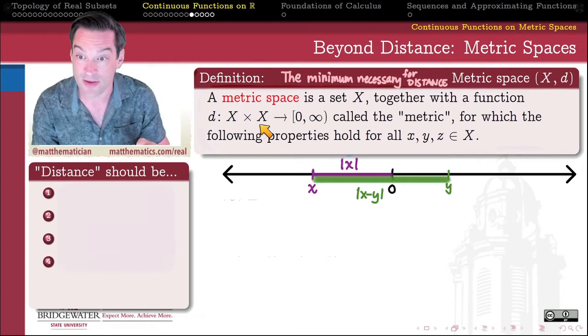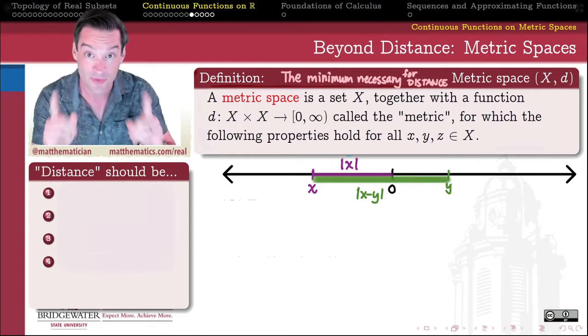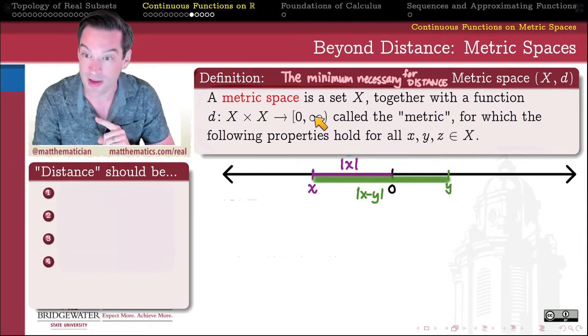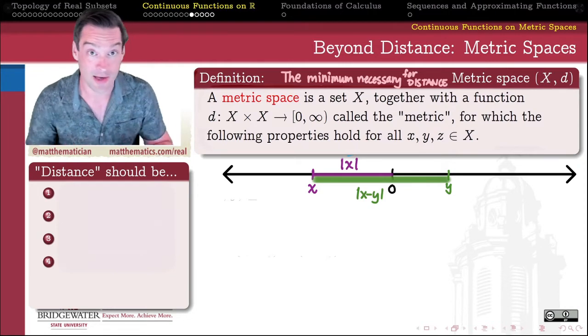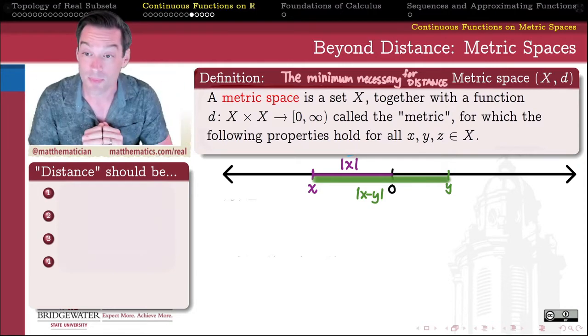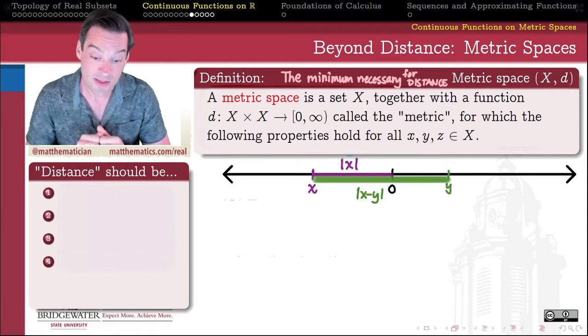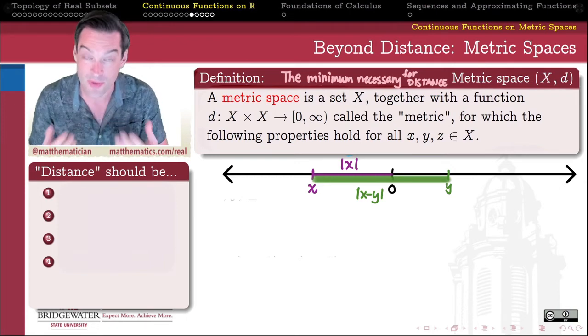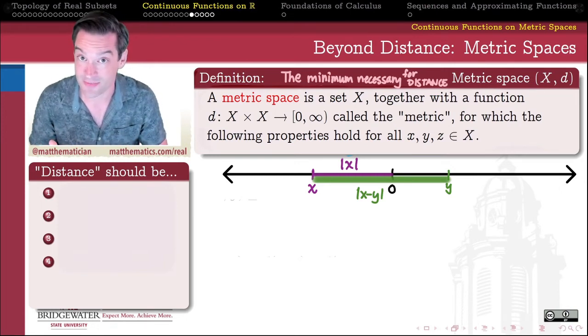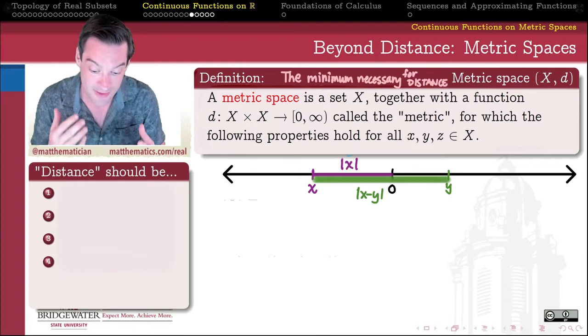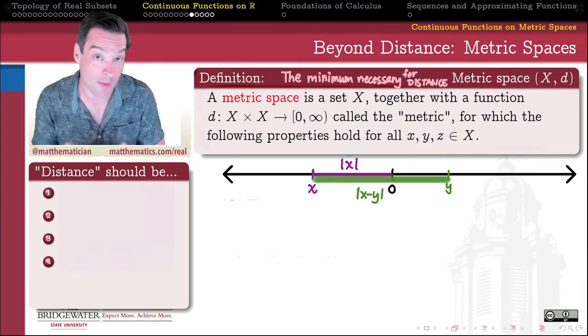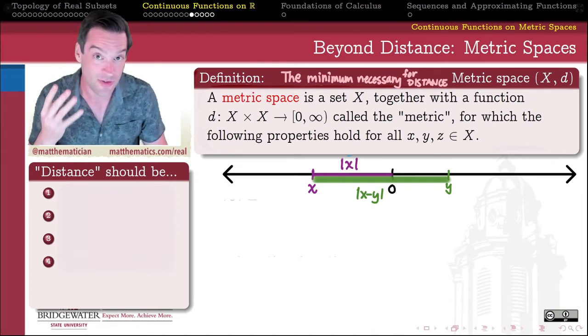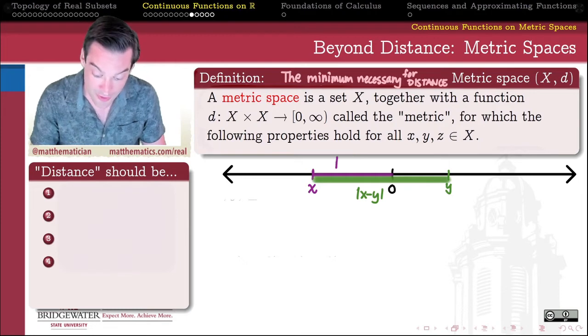The only requirement is that we have some coherent way of measuring the distance between two elements of my set. That distance is measured by a function and we call that function the metric on this space. And we say that it's a function whose domain is X × X. In other words, it's taking two elements of X as the input to my function, and it's producing from those two elements a non-negative real number. And we're going to call that non-negative real number the metric distance between those two points. So what is it that's necessary in order that this function that takes in two points from my set actually gives me a coherent idea of distance?